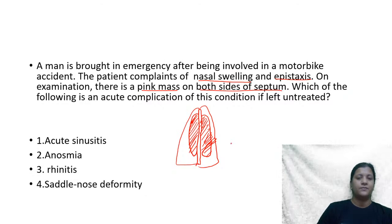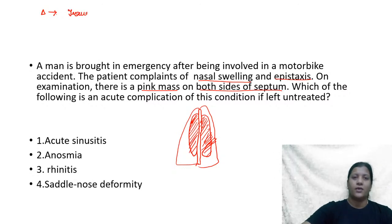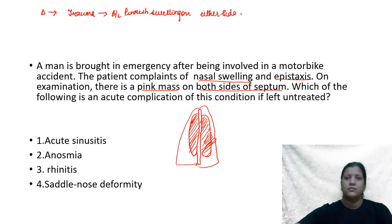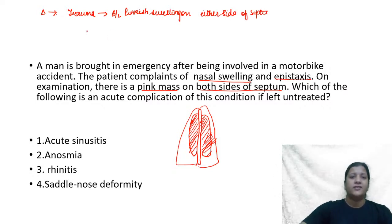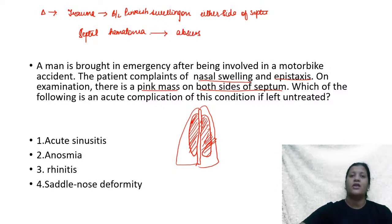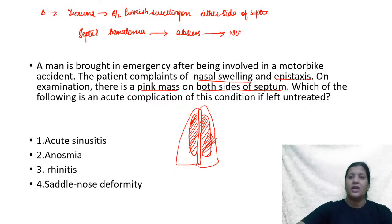Based on the history of trauma followed by bilateral pinkish swelling on either side of the septum, we should think about septal hematoma. If there is a septal hematoma and it is not drained immediately, it can progress to a septal abscess. A septal abscess can result in necrosis of the cartilage, which can lead to saddle nose deformity.